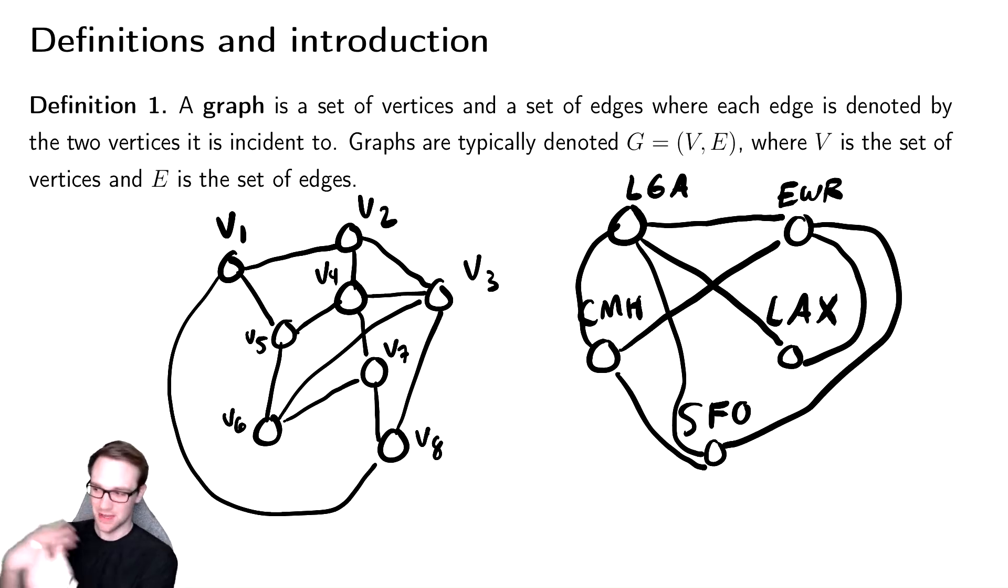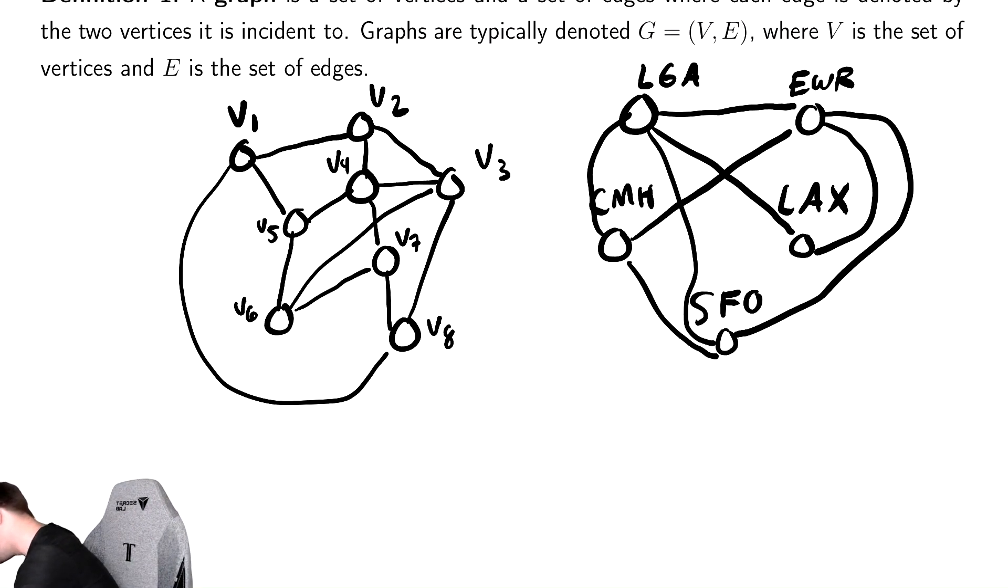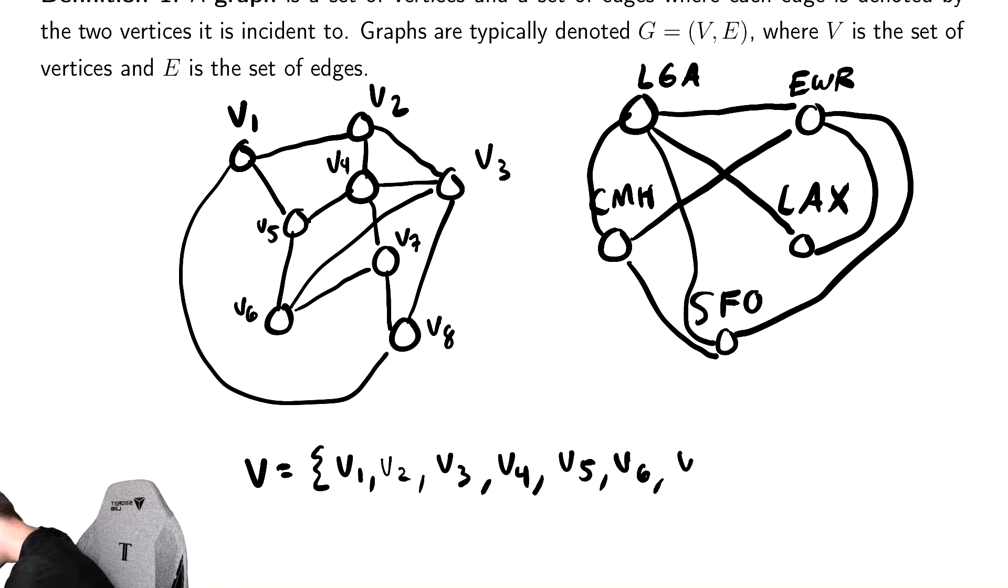If you look at the actual definition, which we haven't talked about in specifics yet, you'll notice that it says V is a set of vertices, and E is a set of edges. What that means is that we can actually write these things out as sets. So we can write V is equal to, and we'll have V1, V2, V3, V4, V5, V6, V7, and V8.